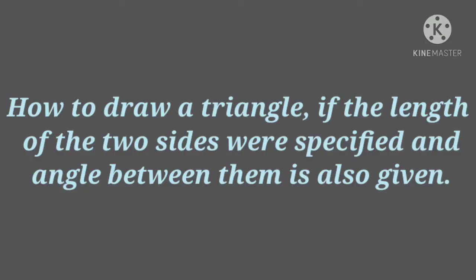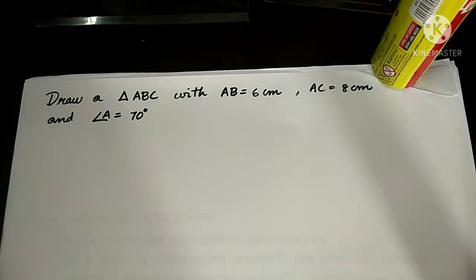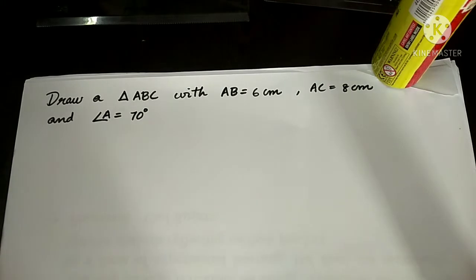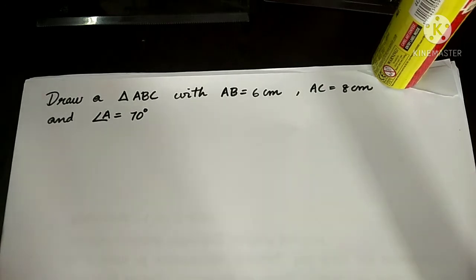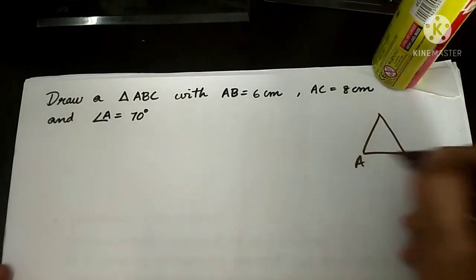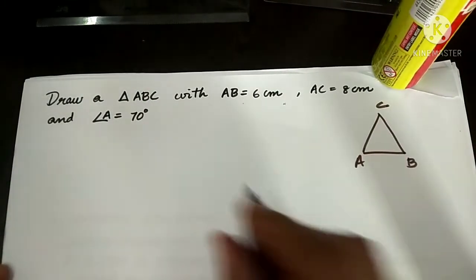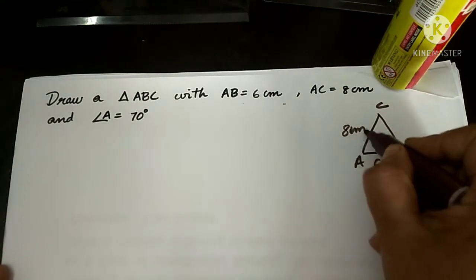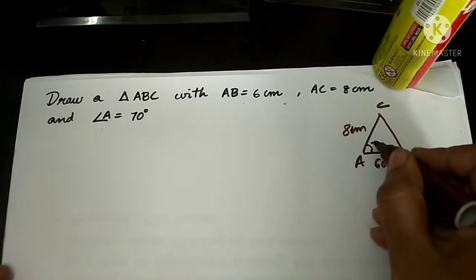Next topic: how to draw a triangle if the length of two sides is specified and the angle between them is also given. Next question: draw a triangle ABC with AB equal to 6 cm, AC equal to 8 cm and angle A equal to 70 degrees. First, we will draw a rough figure. AB is 6 cm, AC is 8 cm, and angle A — that means this angle — is 70 degrees.